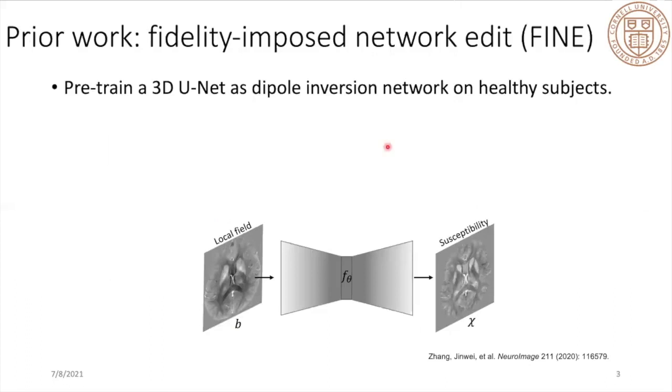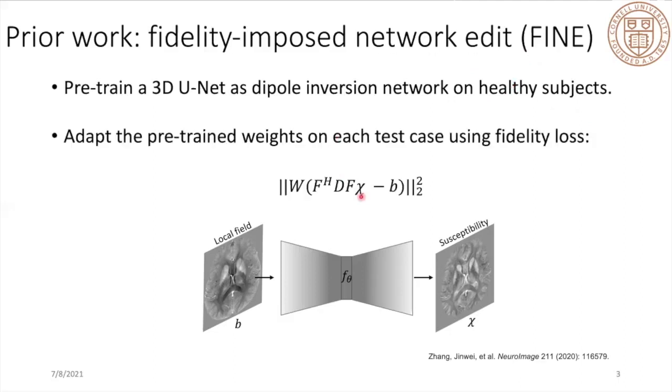Prior work of dipole deconvolution using deep learning is called fidelity-imposed network edit, or FINE. In our prior work, we pre-train a 3D U-Net as a dipole inversion network on healthy subjects. These healthy subjects were scanned using a method called COSMOS, which has multi-orientation scans. This multi-orientation scan can eliminate ill-posedness of the dipole kernel and give us very high quality images as labels for training. But we can only get them in healthy subjects because the scan time of COSMOS is very long. During test time, we propose to adapt the pre-trained network weights on each test case using a fidelity loss.